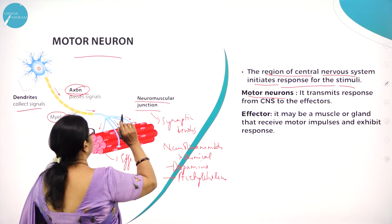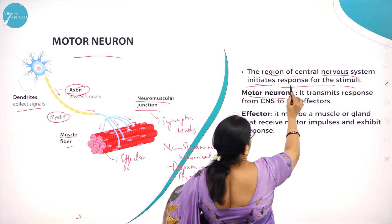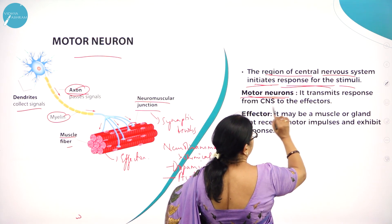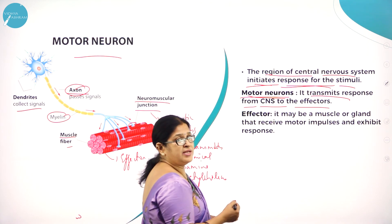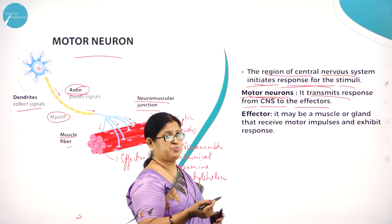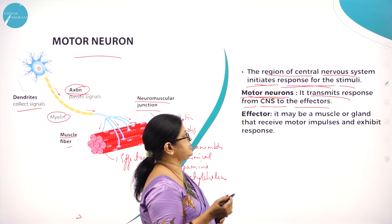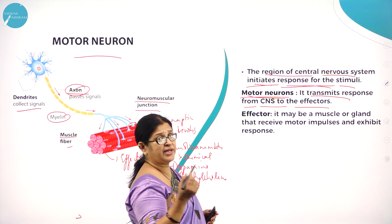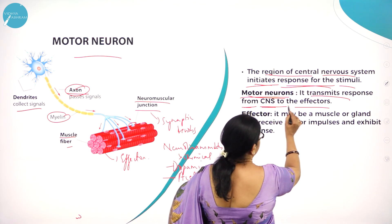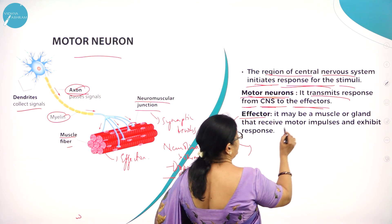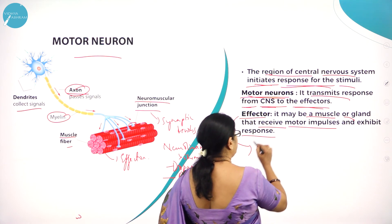The receptor, such as the skin, sends signals to the CNS. The region of central nervous system initiates response for the stimuli. So what is a motor neuron? It transmits response from the CNS to the effector. The sensory neuron carries signals from the receptor to the CNS. The effector may be a muscle or a gland that receives motor impulses and exhibits responses.